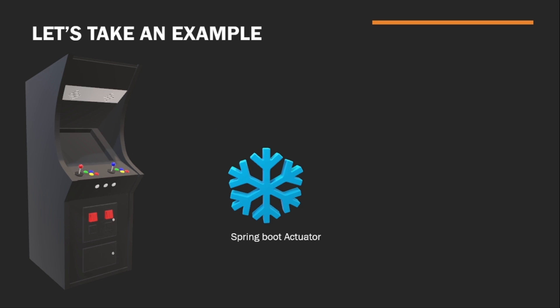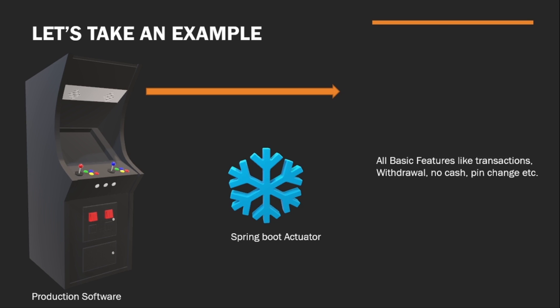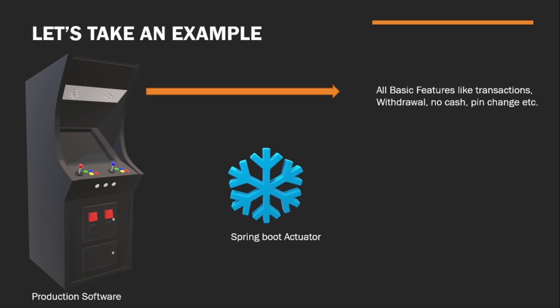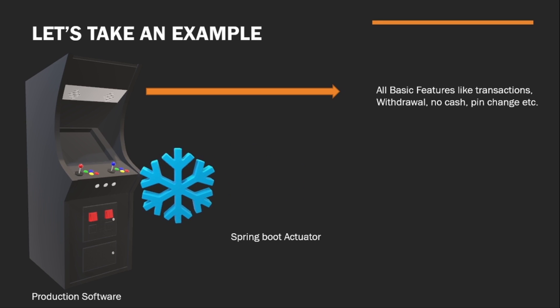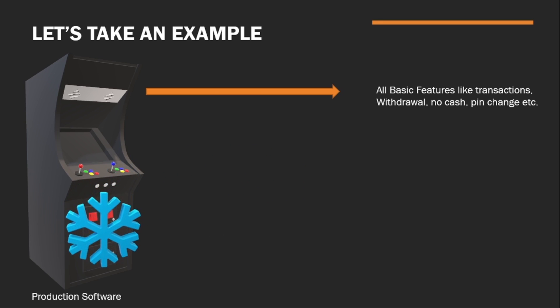Let's look at an example. Suppose this is a production-ready software — an ATM machine. It has features like transaction, withdrawal, pin change, and no-cash alerts. When we add Spring Boot Actuator as one more feature to this application, it provides a list of endpoints useful not for the end user but for monitoring — health check, metrics, available beans, API information — making it easy for developers and operations to understand things and find bugs.